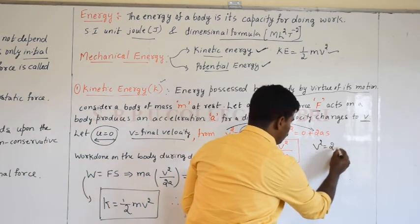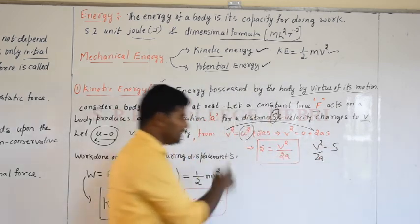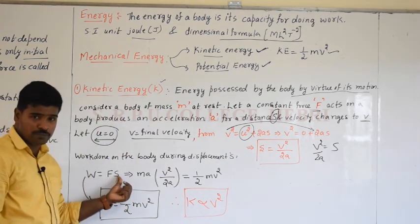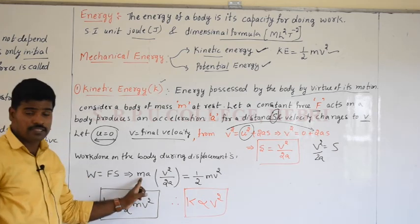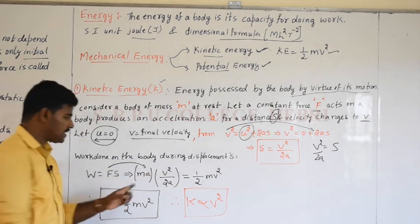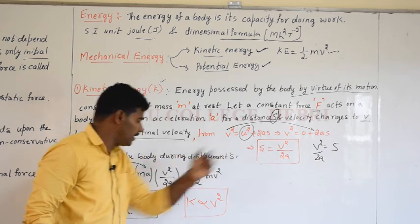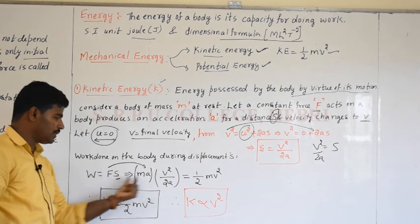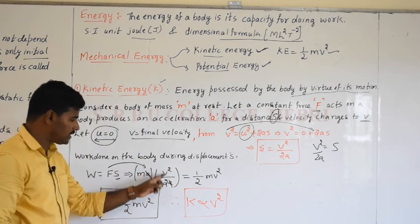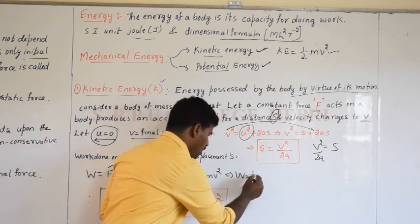Work done on the body during displacement S is W = F × S. By Newton's second law, F = mA. Substituting S = v²/(2A), we get W = mA × v²/(2A). The term A cancels, giving W = mv²/2 = ½mv².